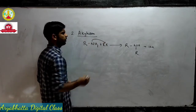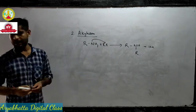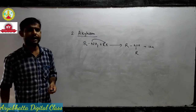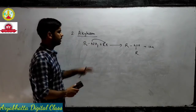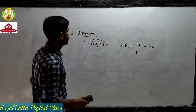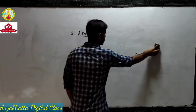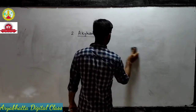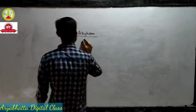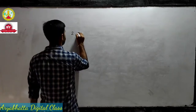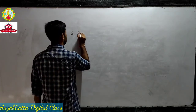The amine will behave as a nucleophile and will attack the carbon to which the halogen is attached, and then in the next step, removal of the halogen will take place. A similar kind of reaction is acylation.